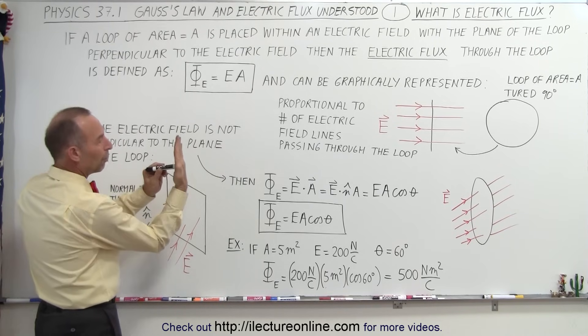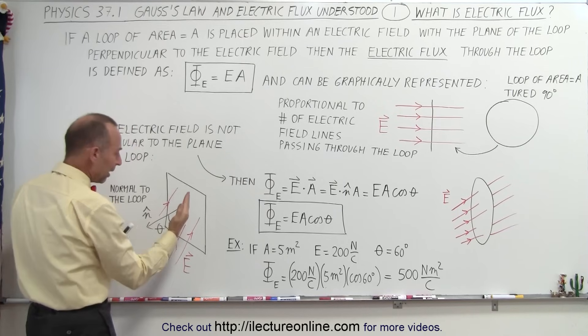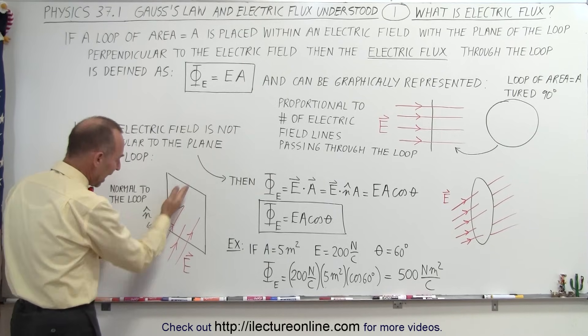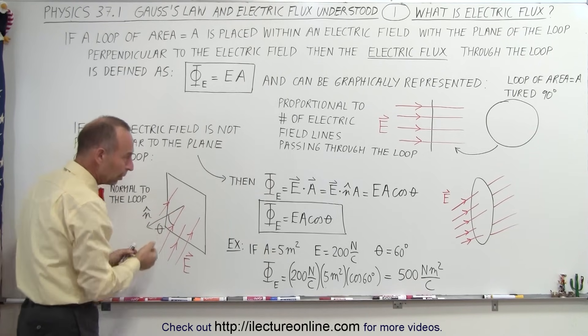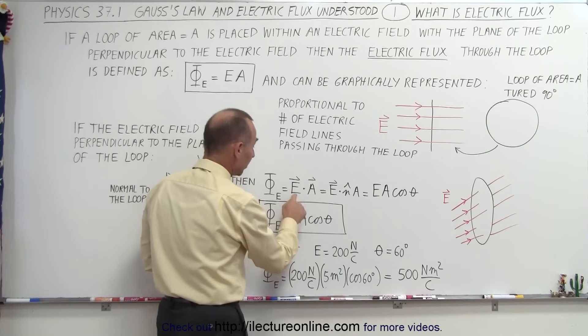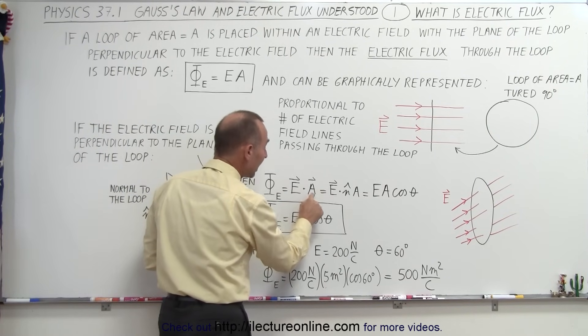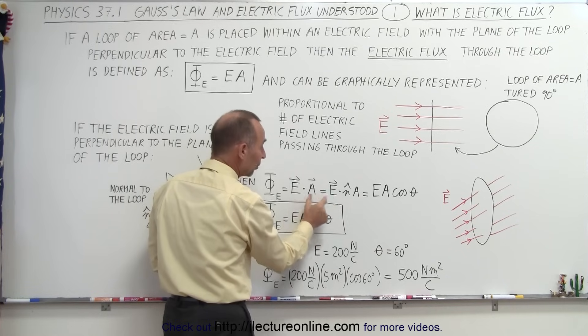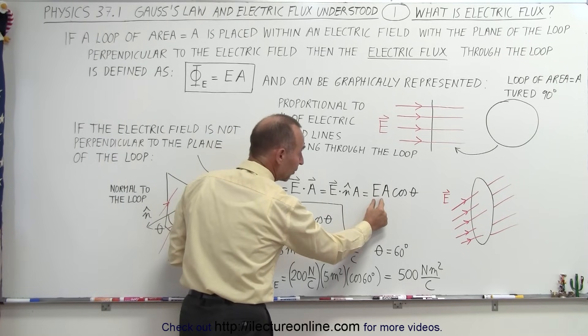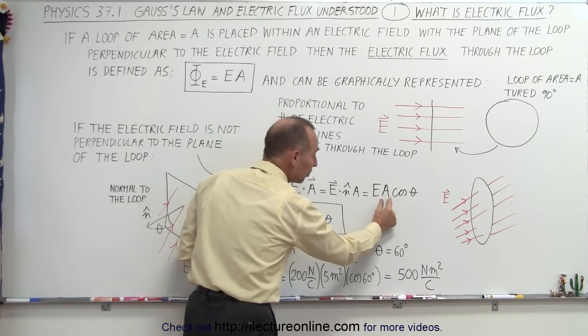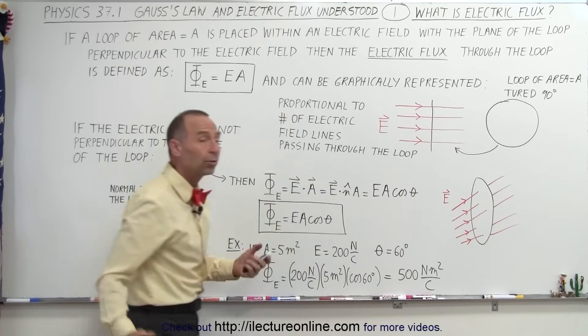Now, if the electric field comes in at a different angle relative to the normal, we can express that by the dot product. It will be the electric field times the area, a dot product, which is simply equal to the magnitude of the field times the area of the loop times the cosine of the angle between them.